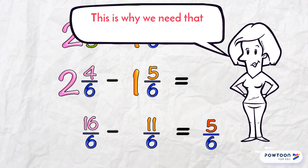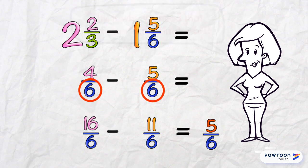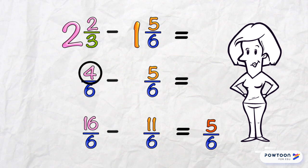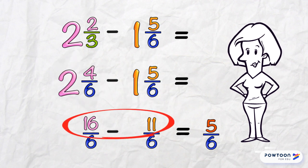Now you know! This is why we need that common denominator first. We need to know if our numerator on the left is big enough to subtract the one on the right. If not, as in this example, then we use the whole number and make improper fractions. Then we subtract.